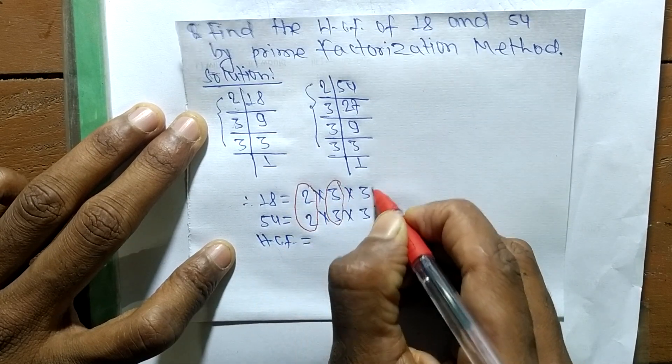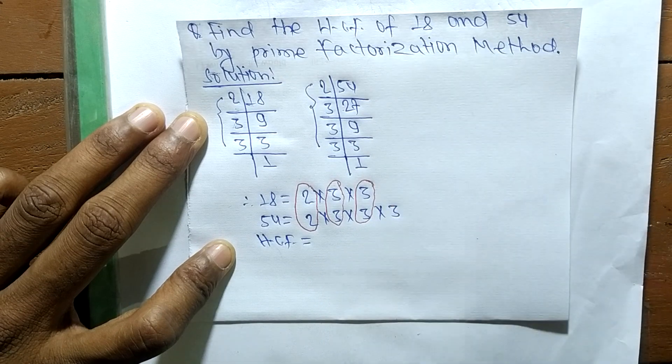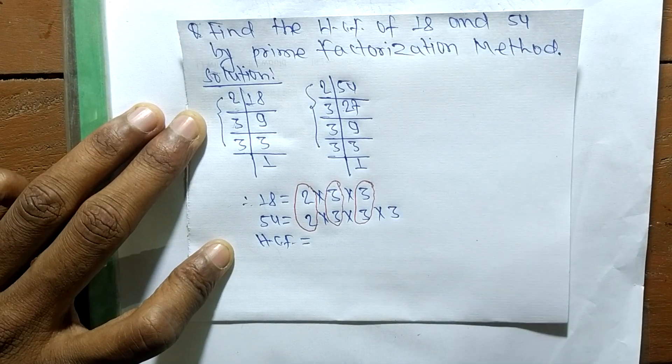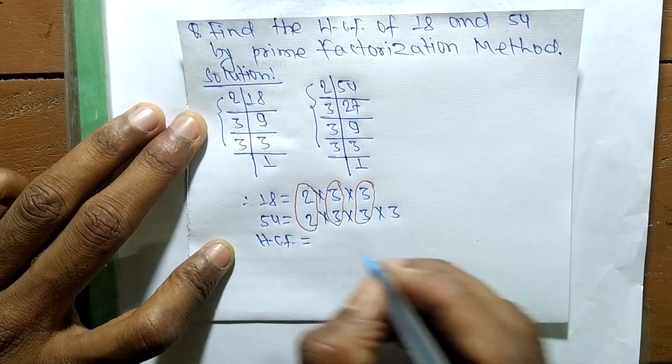one is 3 and third one is also 3. So HCF is the product of all the common factors and